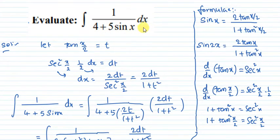So before doing this question, we need some formulas. First formula: sin x is equal to 2 tan x by 2 by 1 plus tan square x by 2. This formula we use when we get sin x in the problem.